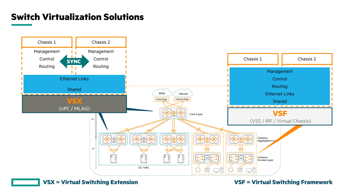Both VSX and VSF are valid options for the collapsed core — it comes down to your high availability needs and your requirements around zero-touch provisioning. At the wired access layer, you'll always be looking at the 6000 series switches. This can be a combination of stacked and non-stacked switches running pure layer 2, with port channels going up to the collapsed core. These access switches are none the wiser that they're connected to two upstream switches running an MC-LAG.